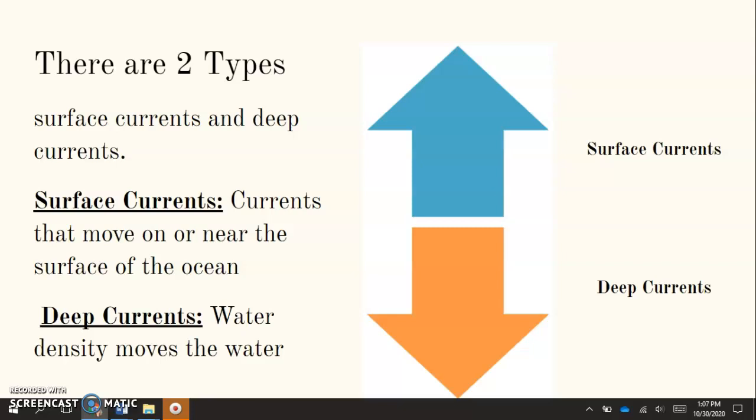So there are two types of ocean currents we need to know about. There are surface currents at the top and these are the currents that move on or near the surface of the ocean and then there are the deep currents that are caused by discrepancies in water density and that moves deeper down below the surface.